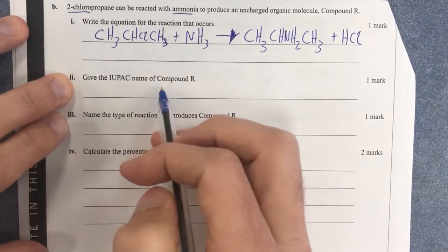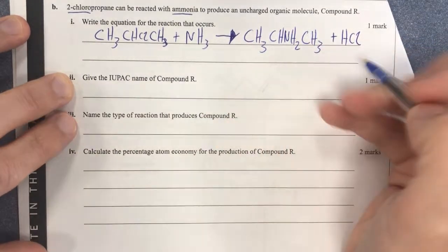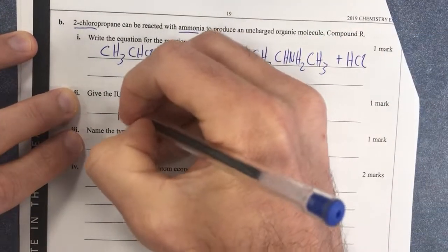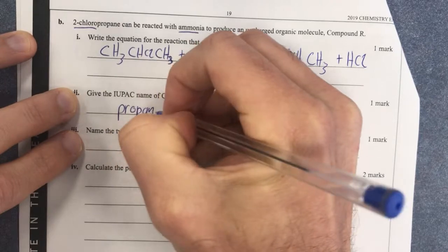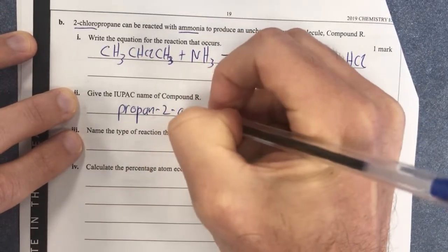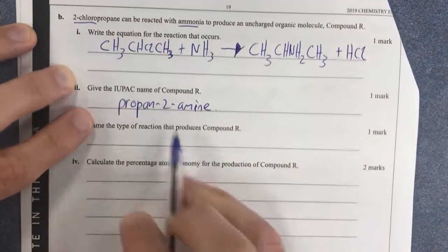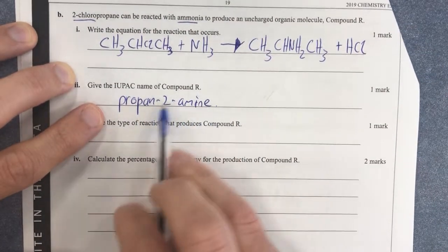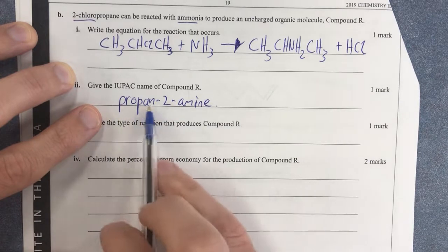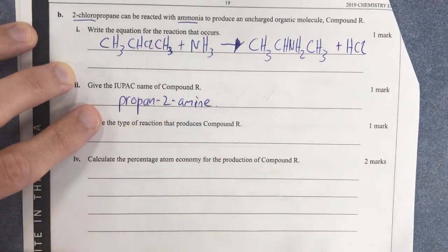What is the IUPAC name for compound R? This guy, well, it's going to be propan-2-amine. Amine is what it is, because that's how we name amines. Propan-2-amine, we put that as a suffix.